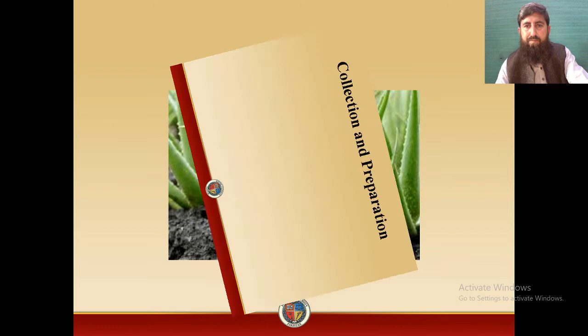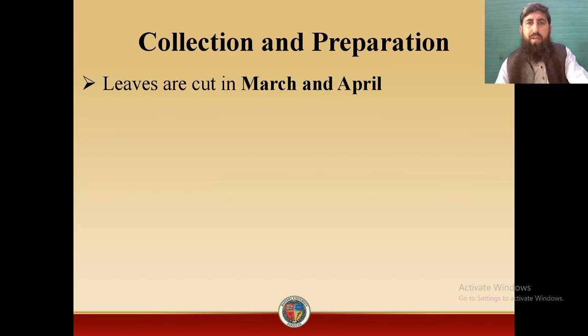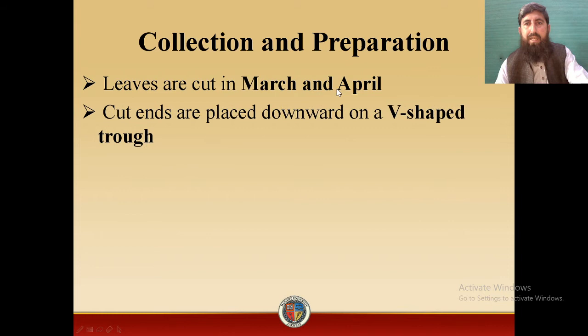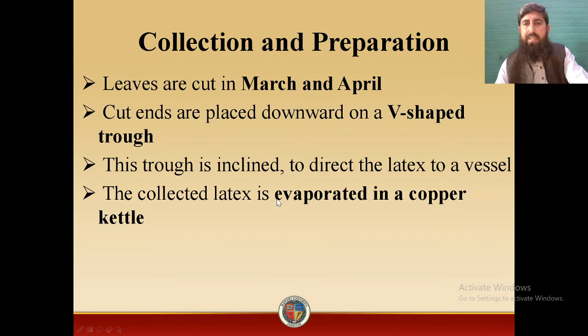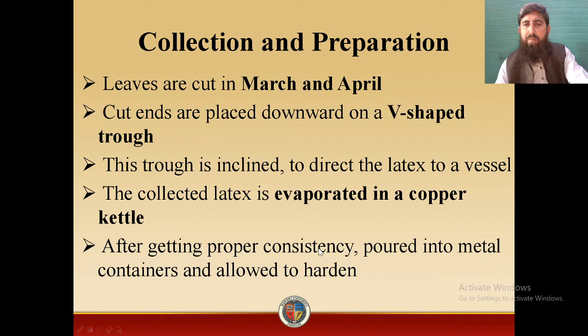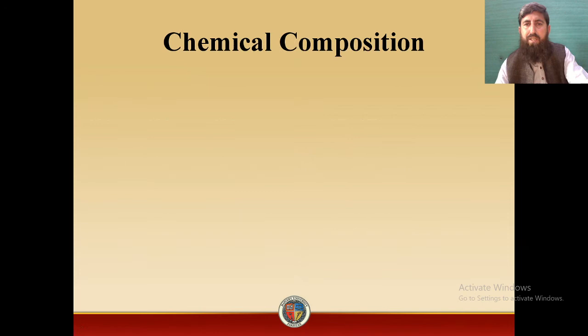Collection and preparation: leaves are cut in March and April, which is the ideal collection time. Cut ends are placed downward on a V-shaped trough, which is inclined to direct the latex into a vessel. The collected latex is evaporated in a copper kettle, then poured into metal containers and allowed to harden into different shapes for later use.